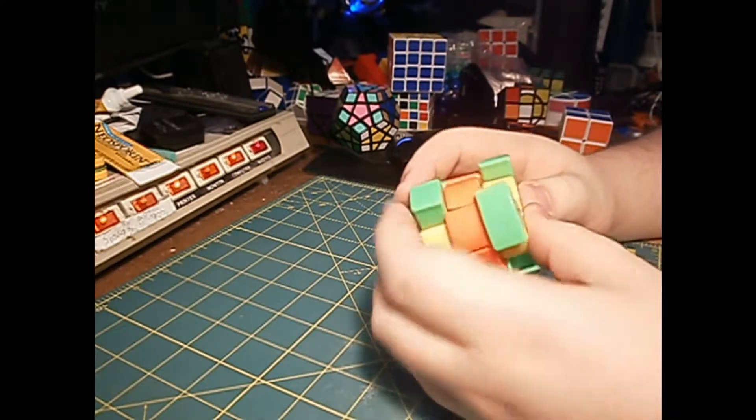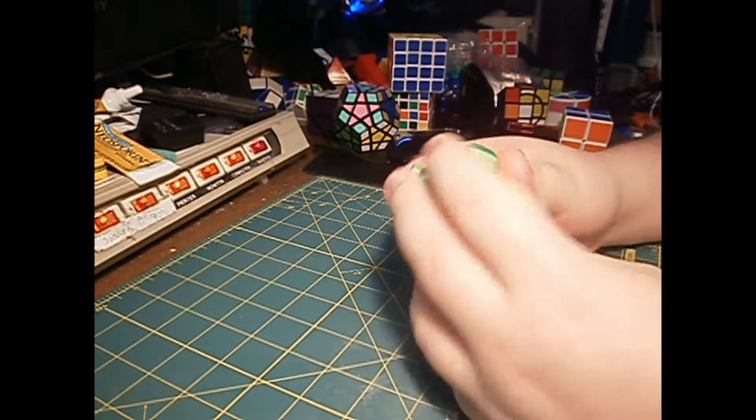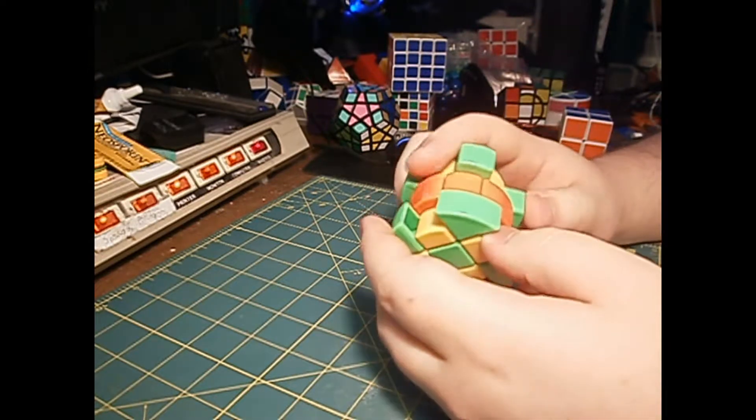And you see it's just got three different layers, so it's just like a 3x3. But it's a shape mod. And if you try to scramble it this way, it won't do anything.